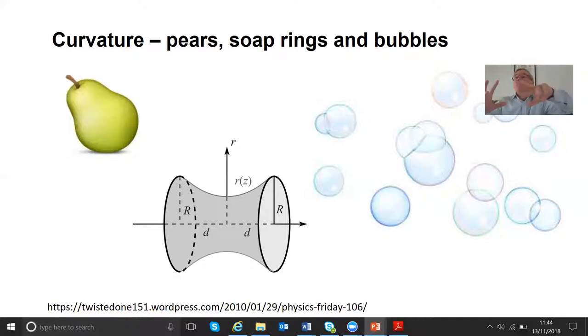So if you have a soap film and two rings that spans the two rings, there's no pressure across the film. So there's no, in the Young-Laplace equation, the fluid pressure is zero because it's air on both sides. And so the two curvatures must exactly cancel. So you either have a flat interface, or you have a curvature where the total curvature is zero.